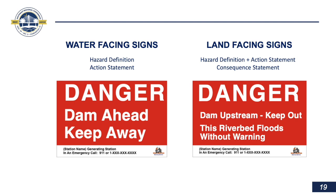Depending on the orientation of the sign, we have some flexibility. If the sign is facing the water, we want it to be very specific, legible, and readable quickly: 'Danger. Dam ahead. Keep away.' Plain and simple. However, if the approach is going to be slower — someone coming by land — we can put a little more information on the sign. In that case, we're combining the hazard definition and action statement: 'Dam upstream, keep out,' and then a consequence statement such as 'this riverbed floods without warning.' Both examples are very concise and meet our standard of at-a-glance understandability.